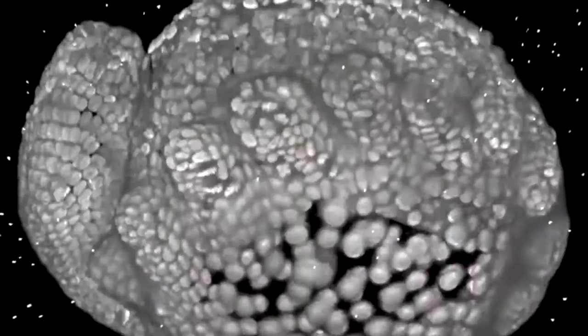The limb buds project ventrally and start growing along their proximodistal axis, and at some point they become subdivided into the distinct leg segments.